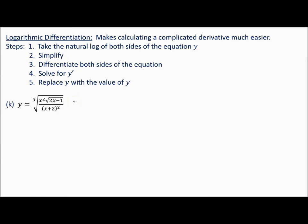Your outside function is the cubed root, so you'd use the power rule. When you take the derivative of the inside, you've got a product rule and a quotient rule going on. We've never done one together this complicated — there are two or three chain rules, product rule, and quotient rule all going on. So logarithmic differentiation is the easier way.